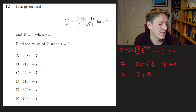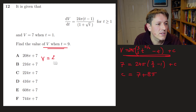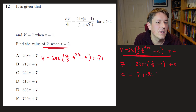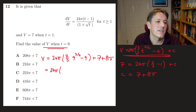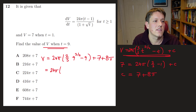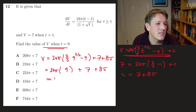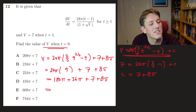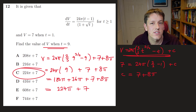Now substituting t = 9: v = 24π·(⅔·9^(3/2) − 9) + 7 + 8π. Since 9^(3/2) = 27, we get ⅔·27 = 18, and 18 − 9 = 9. So v = 24π·9 + 7 + 8π = 216π + 8π + 7 = 224π + 7, and the answer is C.